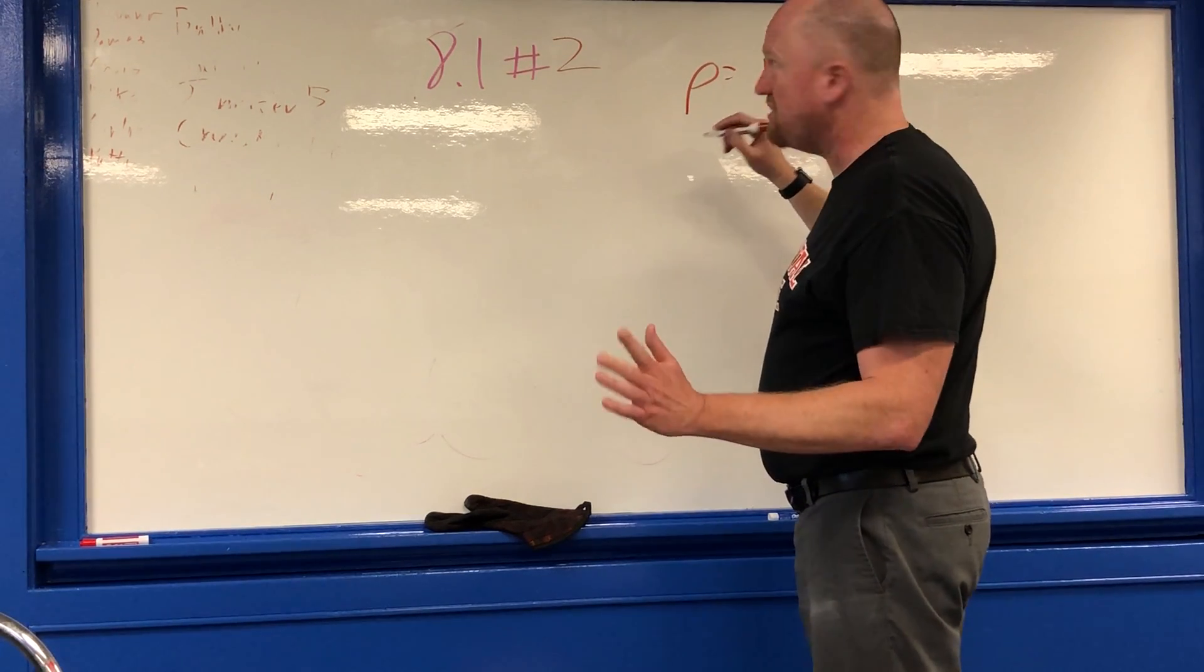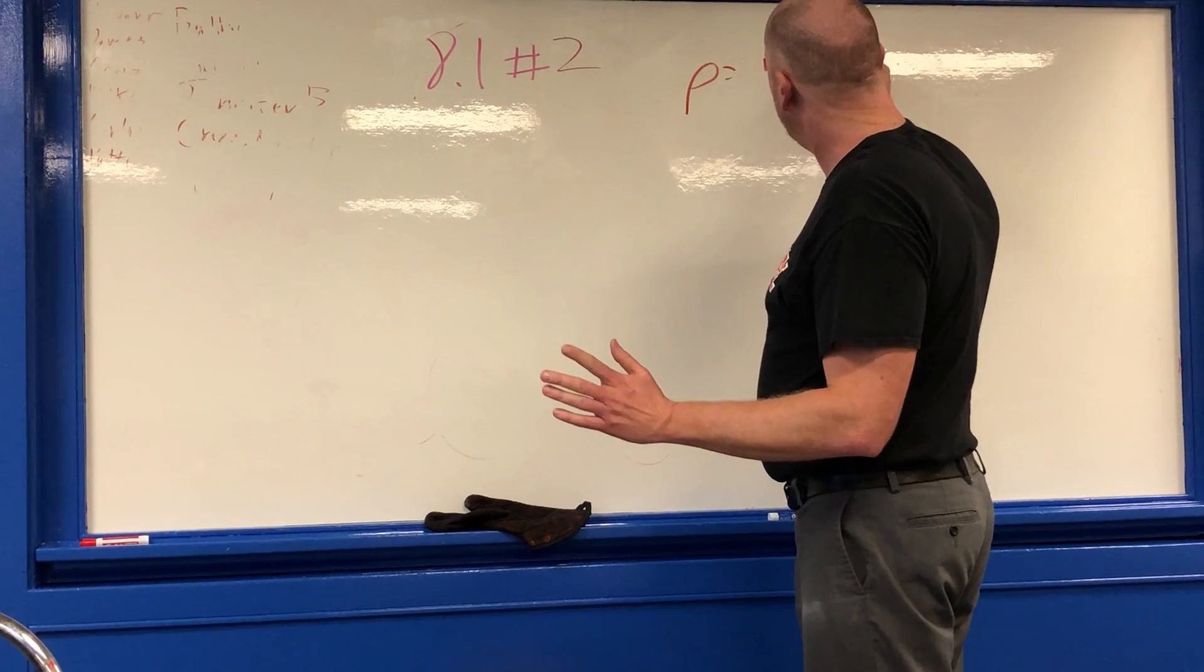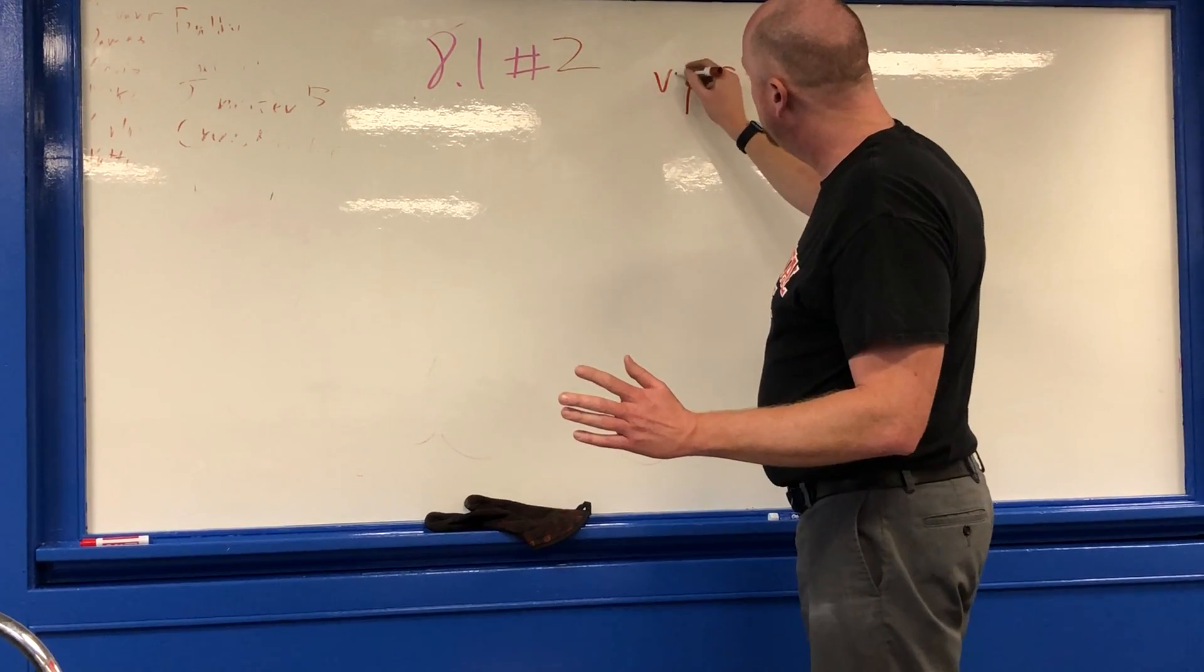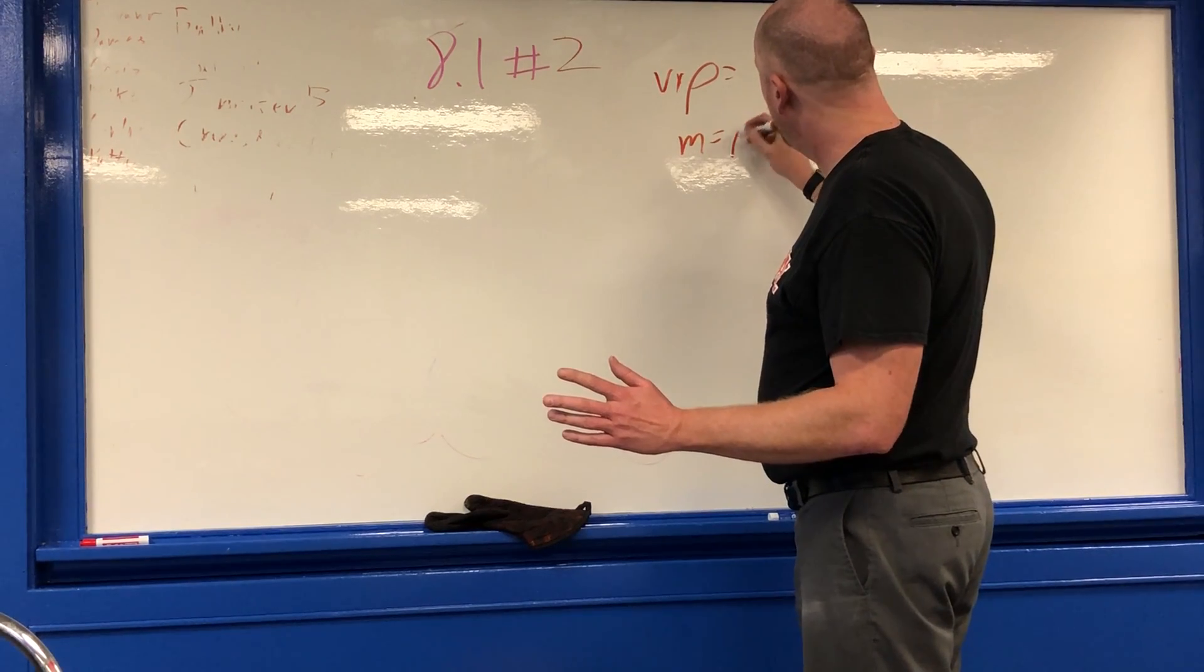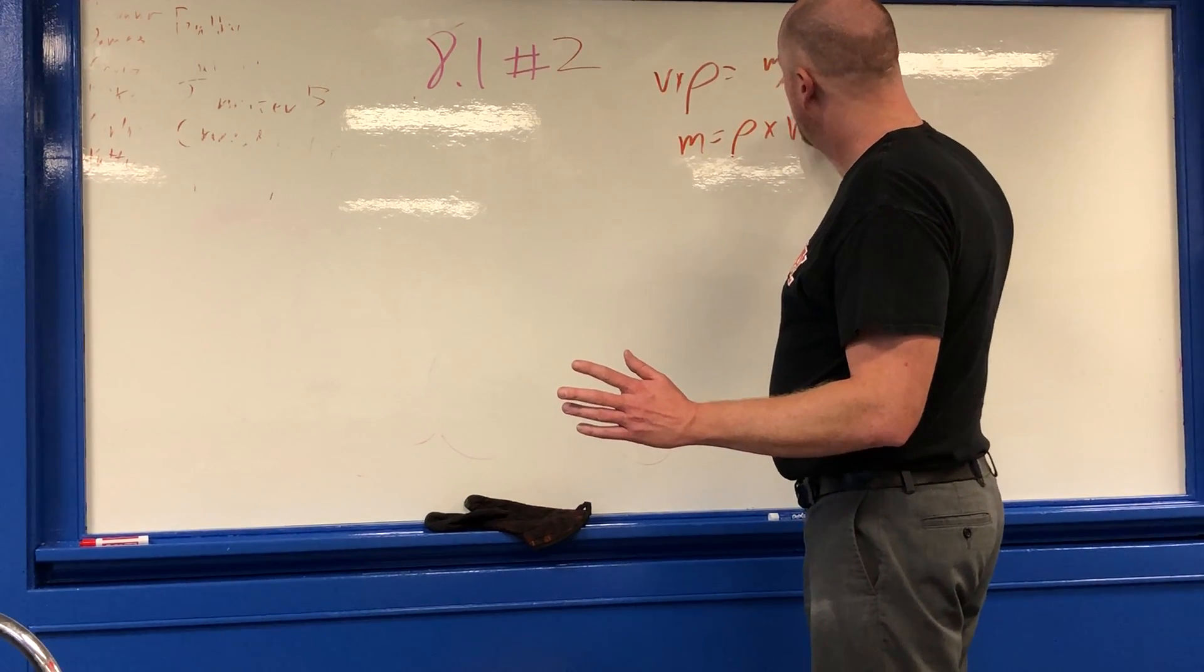So let's just do this algebraically. In order to get mass by itself, you multiply both sides by v, and you get mass, because that cancels, is equal to ρ times volume.